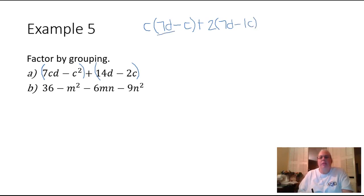And now I notice that my parentheses match. So I'm going to do the greatest common factor one more time. And this time, the greatest common factor actually is the parentheses. So the greatest common factor, 7D minus C.